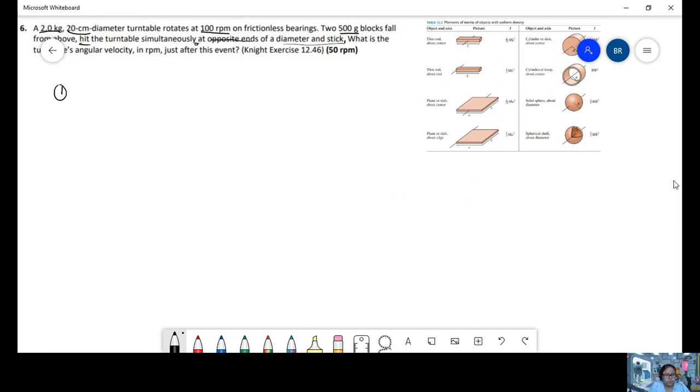We're going to make a drawing. We'll draw the turntable and the axis of rotation, and show that it's about the center. So we have this turntable and it's rotating.